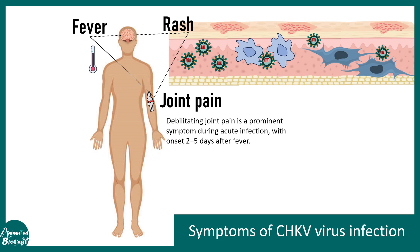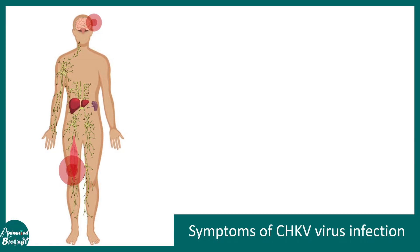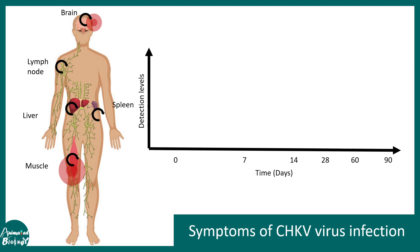The debilitating joint pain is a prominent symptom of the acute phase, occurring within two to five days after the fever. Proximal joints are more susceptible to pain compared to distal ones. The sites of viral replication include the brain, lymph nodes, spleen, liver, and muscle — wherever the virus increases in number it can cause pain, with muscle pain and joint pain being the most prominent signatures.